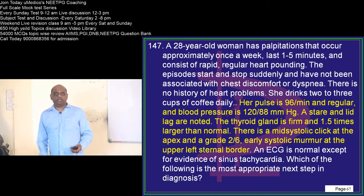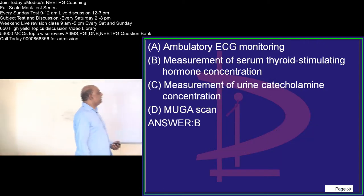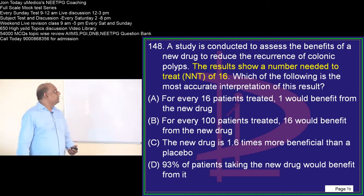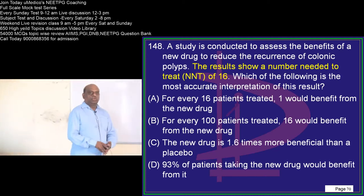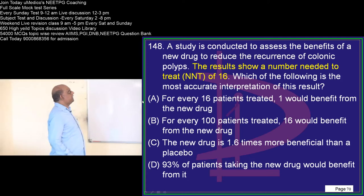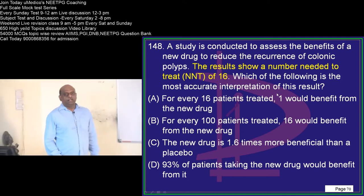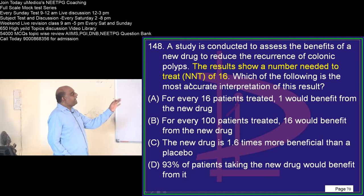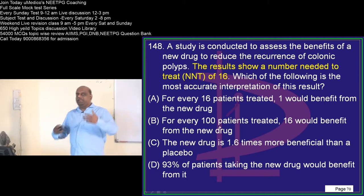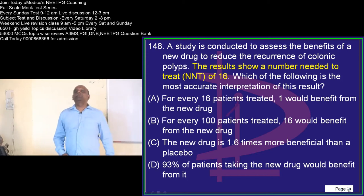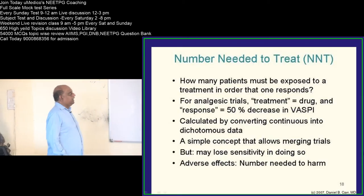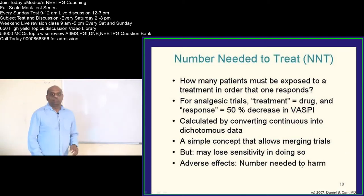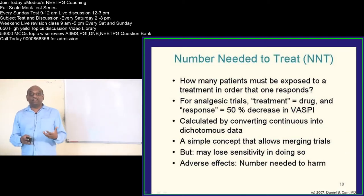A study is conducted to assess the benefits of a new drug to reduce the recurrence of colonic polyps. The results show a number needed to treat (NNT) of 16. So what is the meaning of NNT — this is a very important question. How many patients must be exposed to the treatment in order to discover a response?